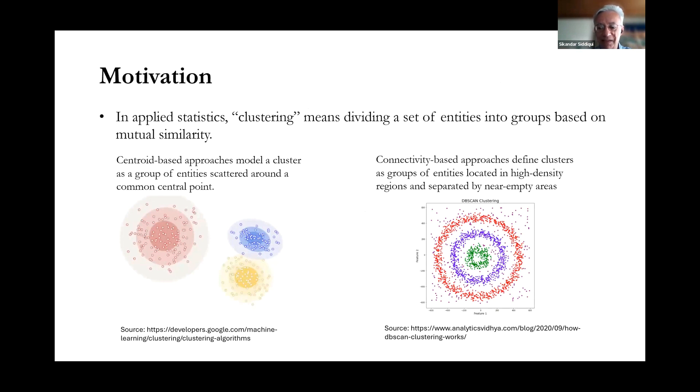The methods available so far mainly fall into two categories. Centroid-based approaches model a cluster as a group of entities scattered around a common mean or central point, whereas connectivity-based approaches define clusters as groups of entities located in high-density regions and separated by near-empty spaces between them. For both of these methods, we've provided an example on our slide.